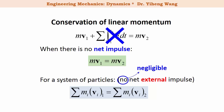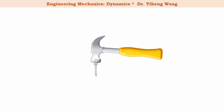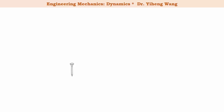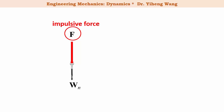So when can we consider the external impulse to be negligible? For that, let's look at an example of a hammer pounding on a nail. Looking at the nail and its free body diagram, it is subjected to its own weight force and a large pounding force from the hammer. From experience, this pounding force significantly changes the momentum of the nail, so it is known as an impulsive force. But compared to the pounding force, during this short period of time, the weight force of the nail will not contribute significant impulse — it will not greatly change the momentum of the nail. Therefore the weight force is known as a non-impulsive force.